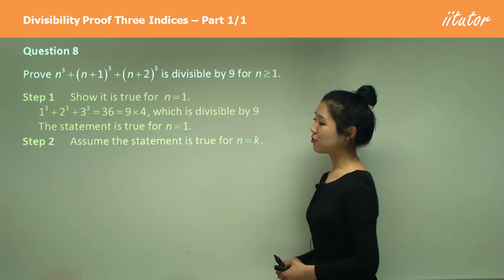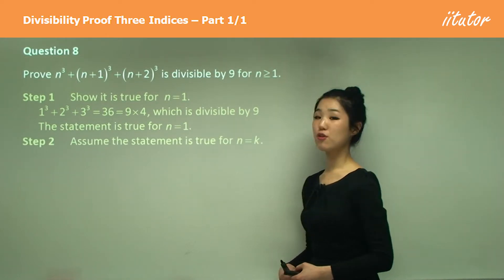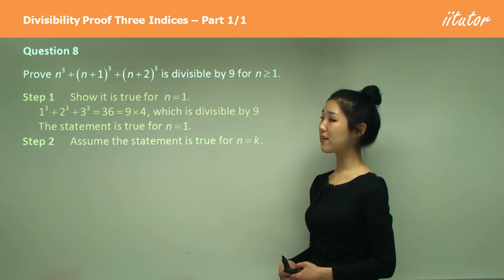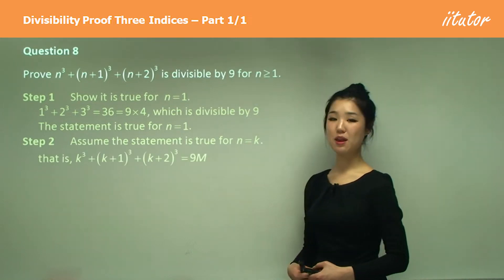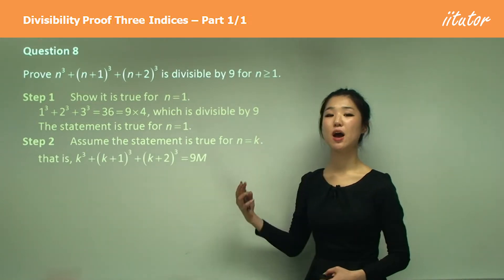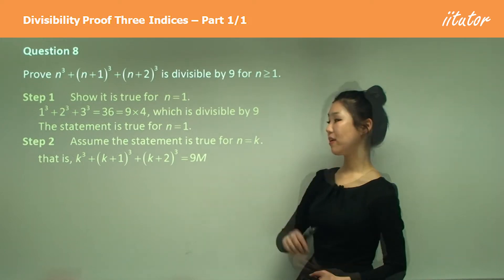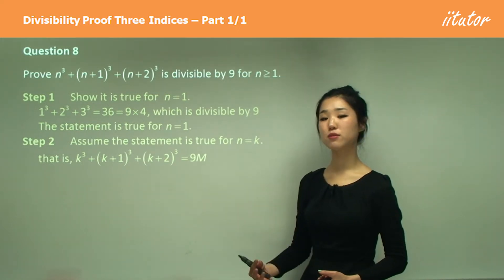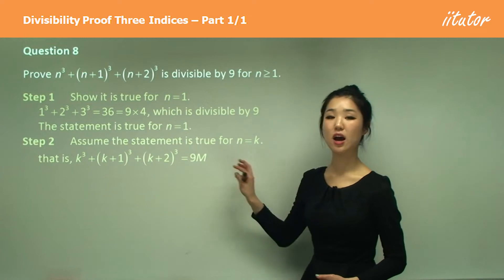Now step 2, our assumption: assume that the statement is true for n equals k. So you replace all your n's with k and make it equal to 9 times some number, in this case m. It's divisible by 9, it's a multiple of 9, so that's why I did 9 times some number.